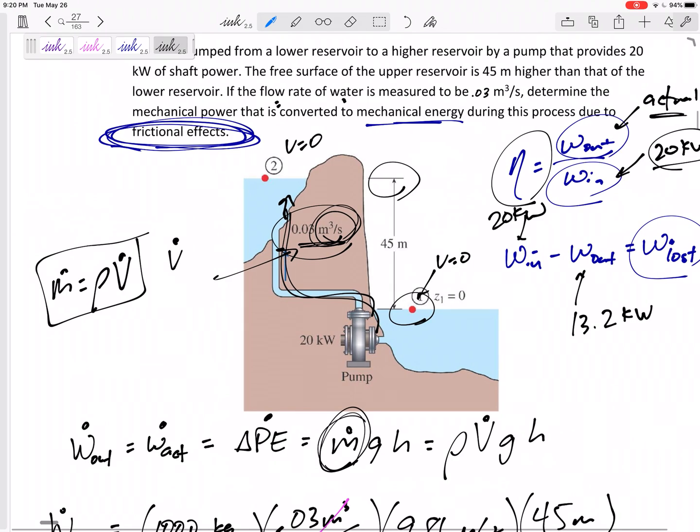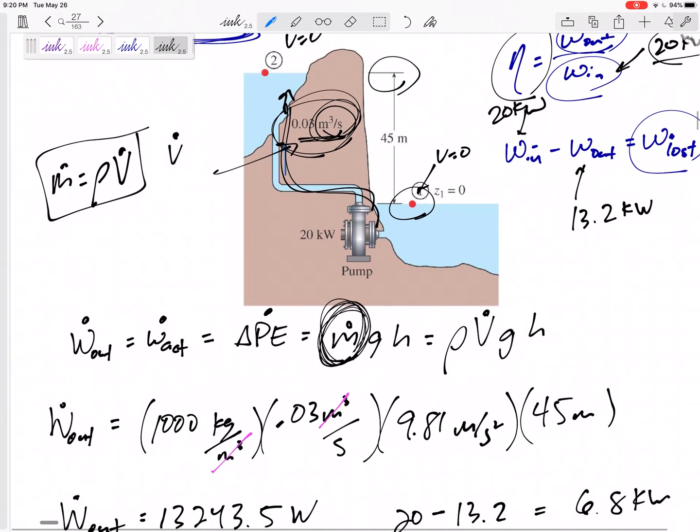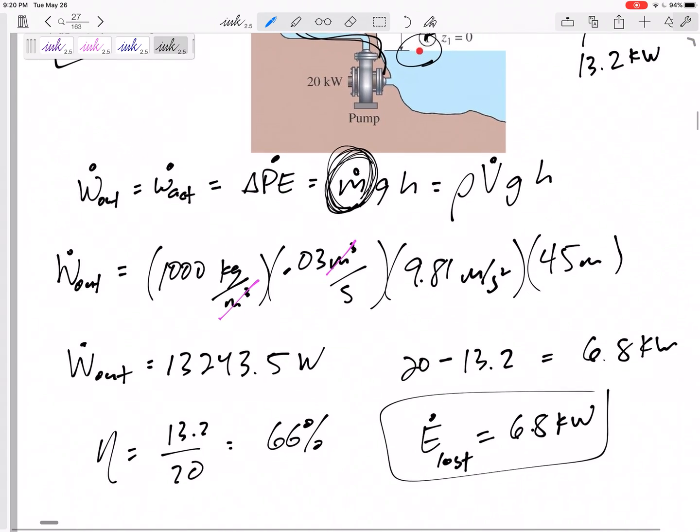All right. So big thing here is if the equation asks for an M dot, don't just plug in a V dot, right? Don't just plug in a V dot. And noticing that potential energy is the only type of real work that's being done, real change in energy that's being done, and finding the energy lost.